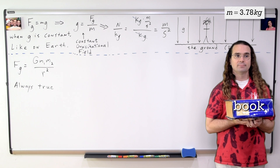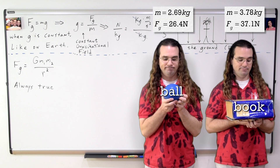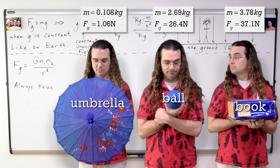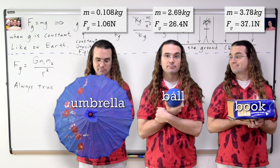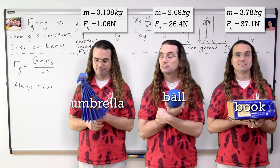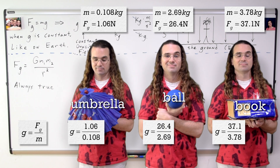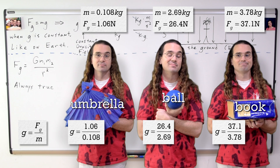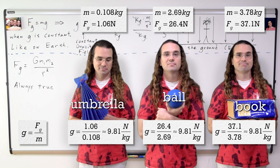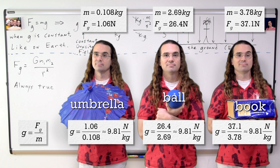How about this? If Mr. P were holding a book, the book would have a force of gravity acting on it. The same would be true for a medicine ball and an umbrella. Each object has a different mass and therefore a different force of gravity acting on it. However, because the gravitational field equals the force of gravity divided by mass, each object has the same ratio of 9.81 newtons per kilogram and therefore the same gravitational field acting on it.